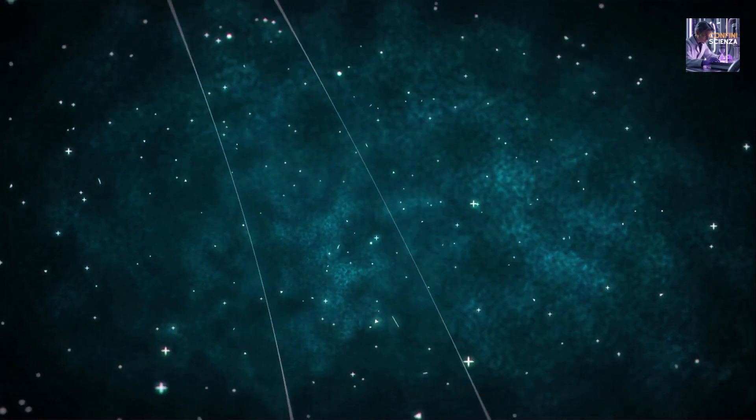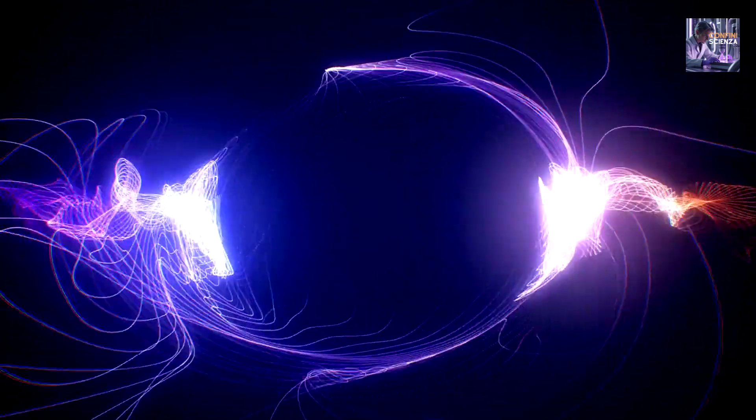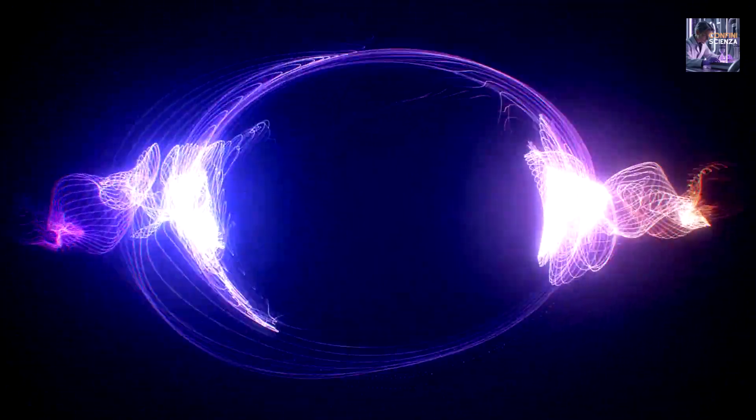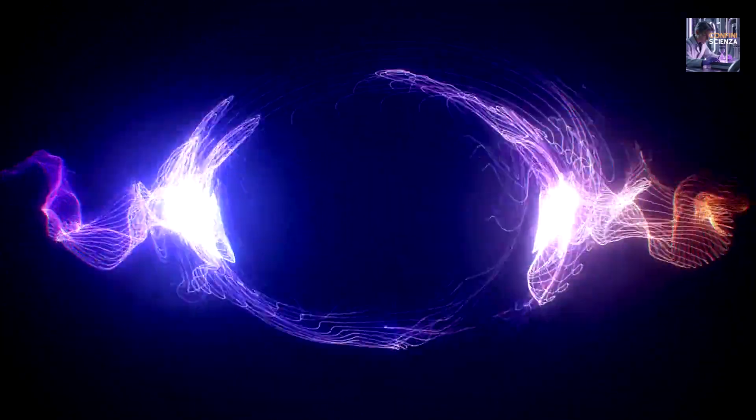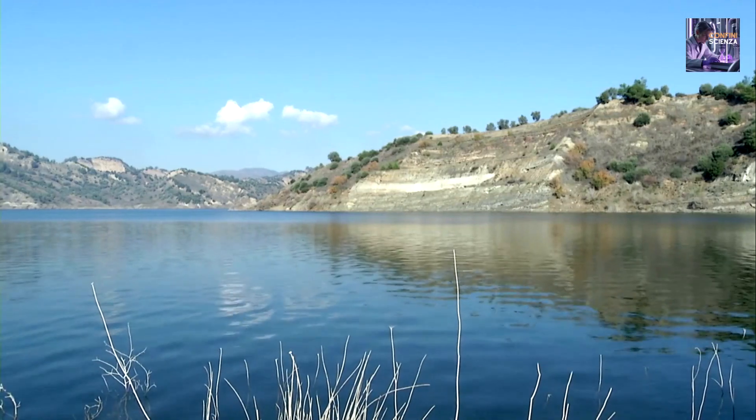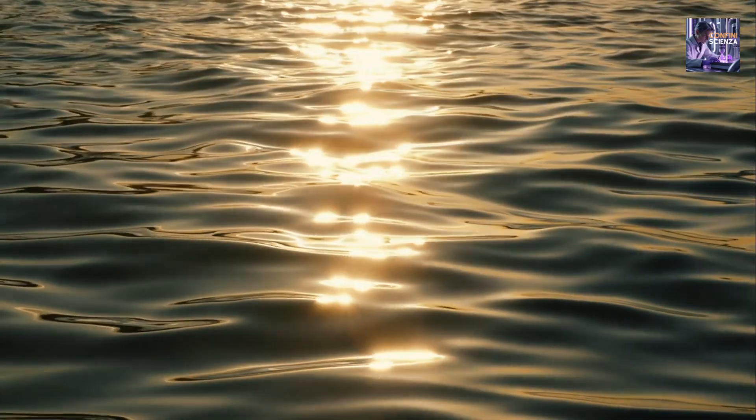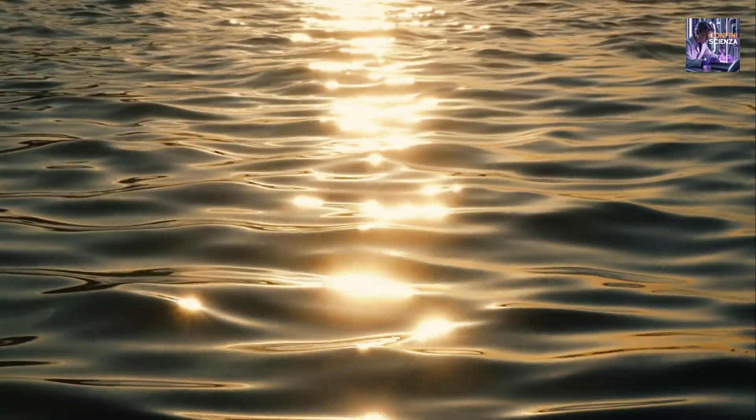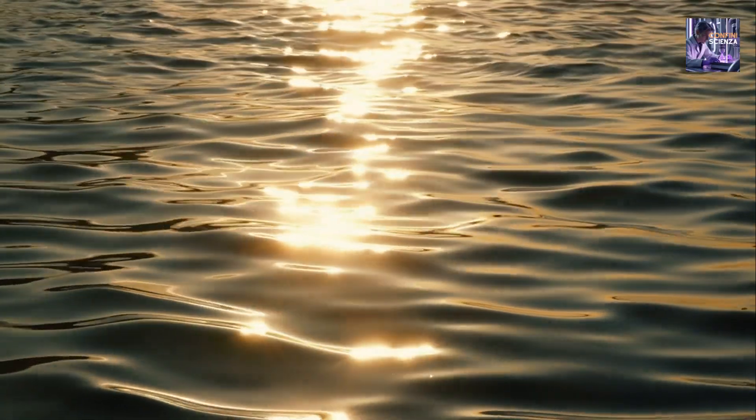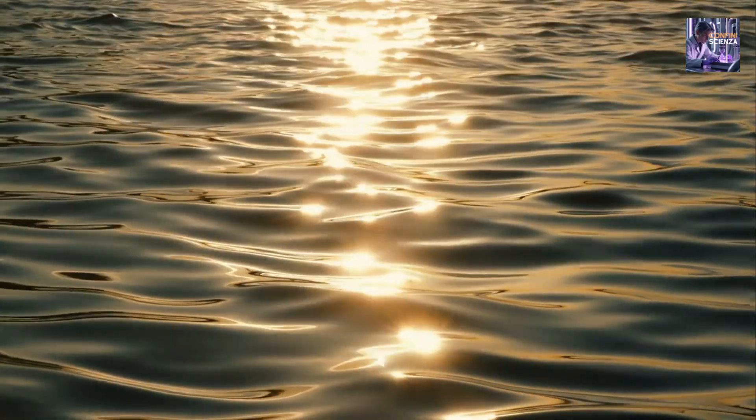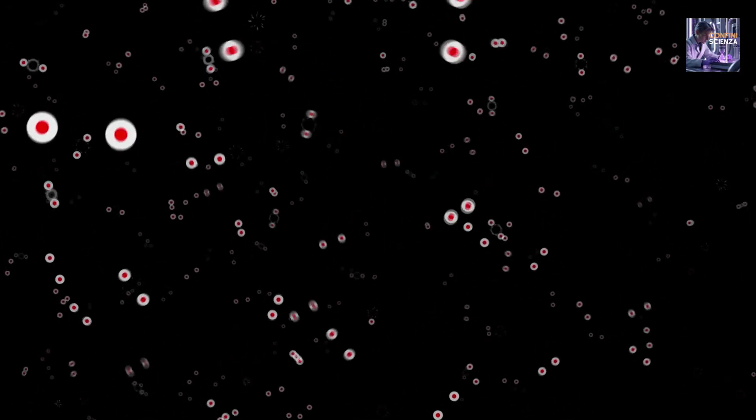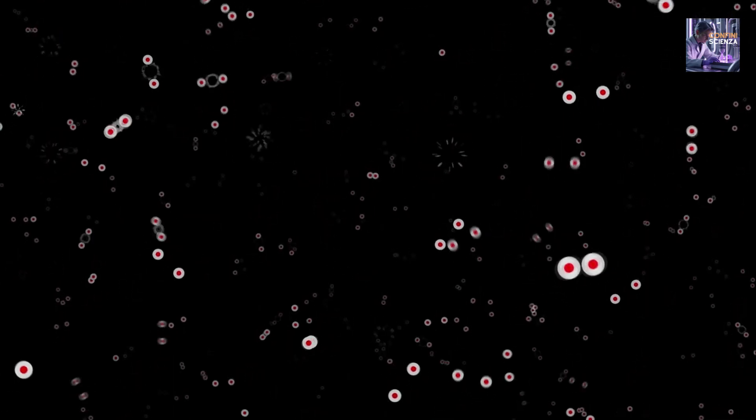But here's the crucial point. Even in their lowest energy state, when there are no visible real particles, these fields are not perfectly static and flat. They constantly fluctuate. Imagine the surface of a perfectly calm lake. In reality, at a microscopic level, there are always small, even imperceptible, ripples. These are quantum fluctuations. And it is precisely from these fluctuations that the so-called virtual particles arise.